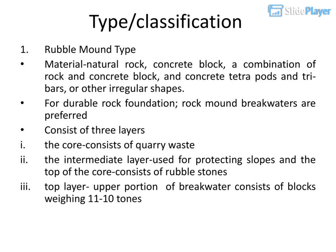Type/Classification — Rubble mound type: Materials include natural rock, concrete block, a combination of rock and concrete block, and concrete tetrapods and tri-bars or other irregular shapes. For durable rock foundation, rock mound breakwaters are preferred. It consists of three layers: the core consists of quarry waste; the intermediate layer protects slopes and the top of the core and consists of rubble stones; the top layer consists of blocks weighing 11 to 10 tonnes.